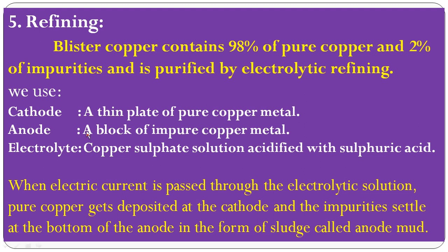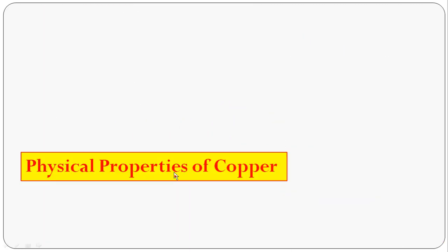These are the five steps of extraction of copper: Step 1 - Concentration, Step 2 - Roasting, Step 3 - Smelting, Step 4 - Bessemerization, Step 5 - Electrolytic refining.